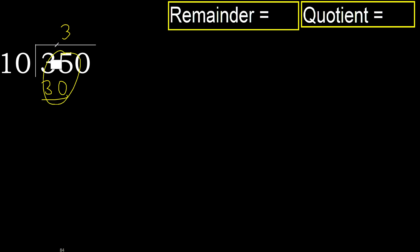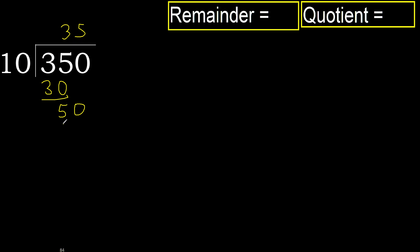Subtract: 35 minus 30 is 5. Next, bring down to get 50. Multiply by 5: 50 is not greater.